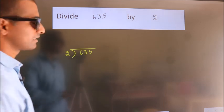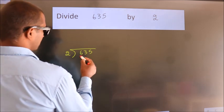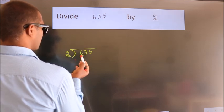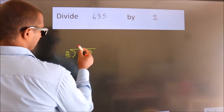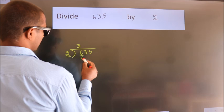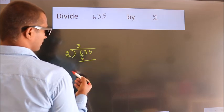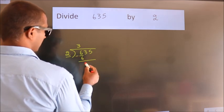Next. Here we have 6, here 2. When do we get 6? In 2 table, 2 threes, 6. Now, we should subtract. We get 0.